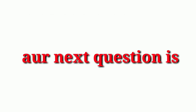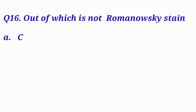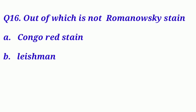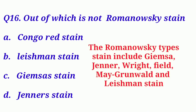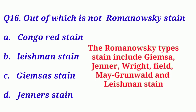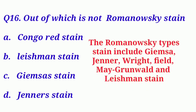Our next question is: Which of the following is not a Romanowsky stain? Option A: Congo red stain. Option B: Leishman stain. Option C: Giemsa stain. And Option D: Jenner stain. The Romanowsky-type stains include Giemsa, Jenner, Wright, Field, McGranawald, and Leishman stain, used in hematology and cytology.